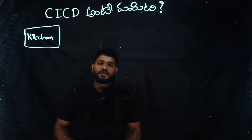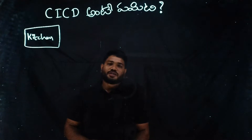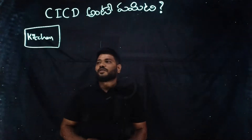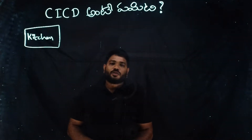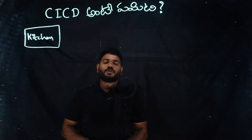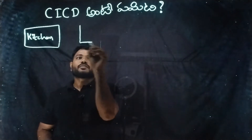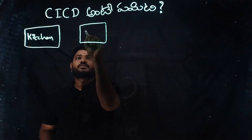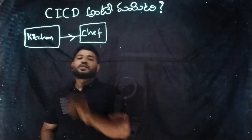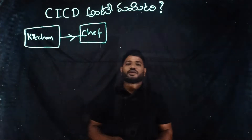Let's take a look at the kitchen. For the first step, you order chicken biryani. For the general order, they order the ingredients. Let's talk about this.